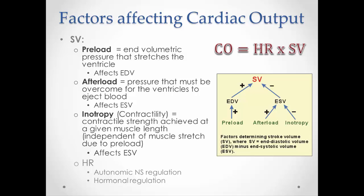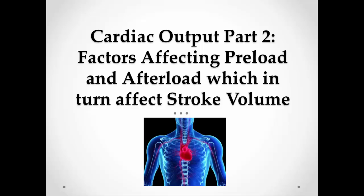As I mentioned, the fourth video will look at heart rate, which also affects cardiac output — specifically how the autonomic nervous system and hormonal regulation affect heart rate. That's going to end this video. The next video will talk about what factors affect preload and afterload, and therefore stroke volume and cardiac output.